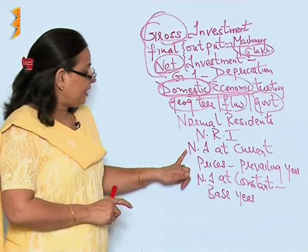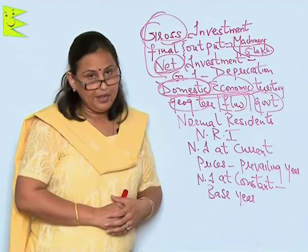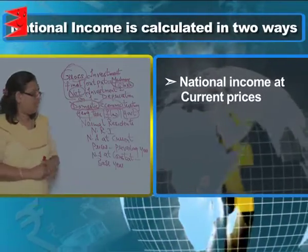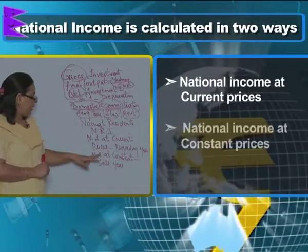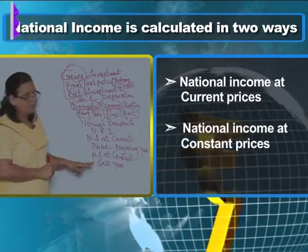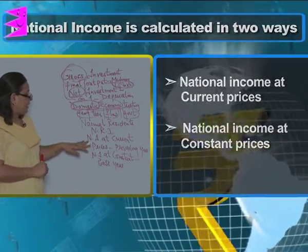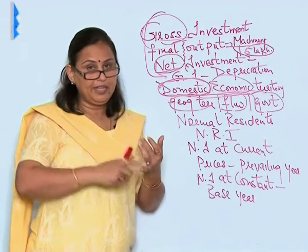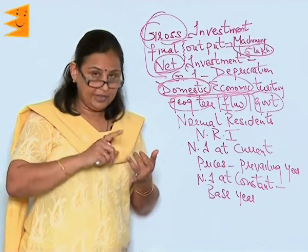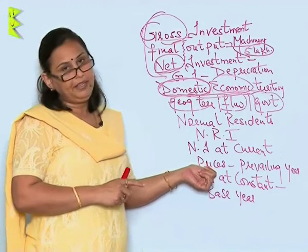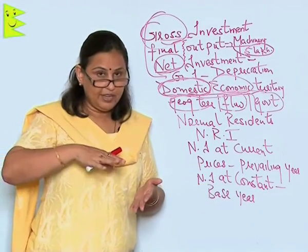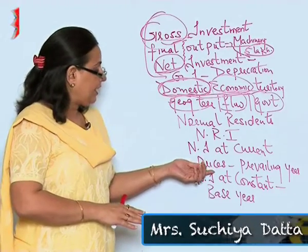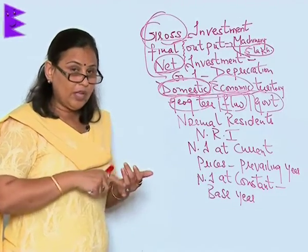When national income has to be calculated, it is generally done on two bases: national income at current prices and national income at constant prices. National income at current prices means calculating the national income at the prevailing year — for example, 2011. If calculating at current price, that means at 2011 prices.